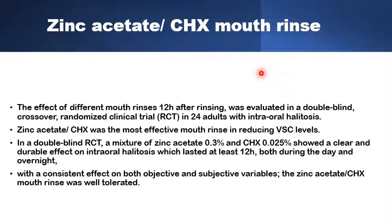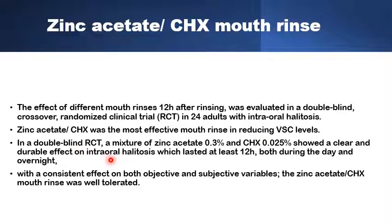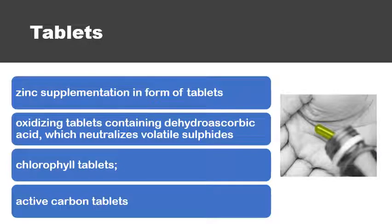In addition to the Cochrane review, recent randomized controlled trials including double-blind crossover trials have examined combinations of active ingredients. One trial looked at zinc acetate combined with chlorhexidine as a mouth rinse and showed that this mixture could give a clear and durable effect in the inhibition of intraoral halitosis for up to 12 hours. Chemotherapeutic agents are usually used as mouth rinses, toothpastes, or chewing gums, but can also be used as tablets — including zinc supplements, dihydroascorbic acid as an oxidizing agent, chlorophyll tablets, and active carbon tablets.